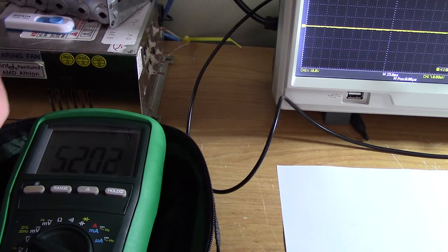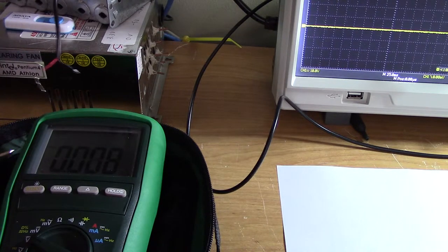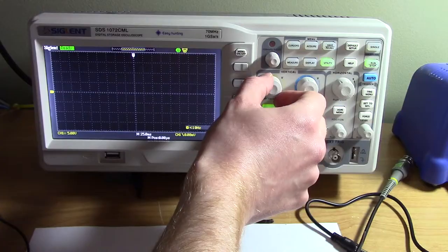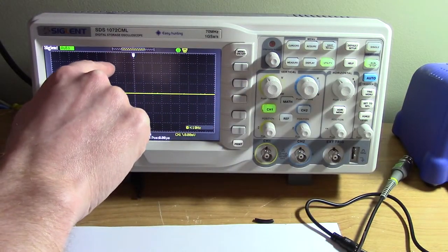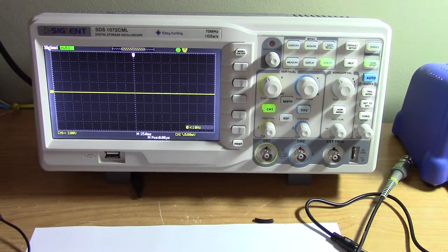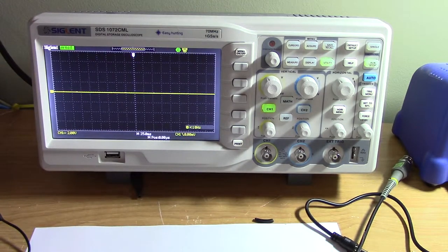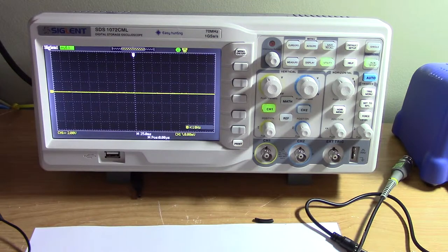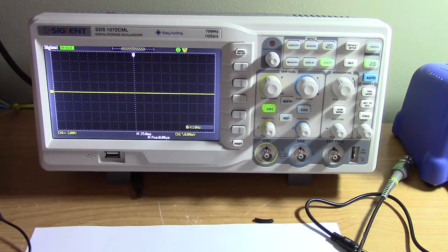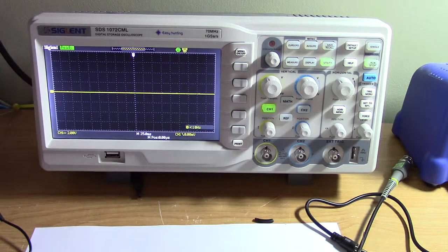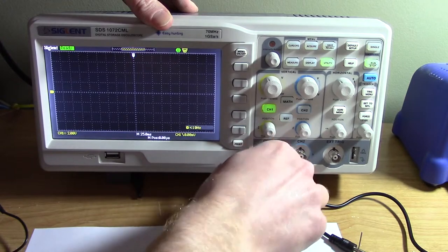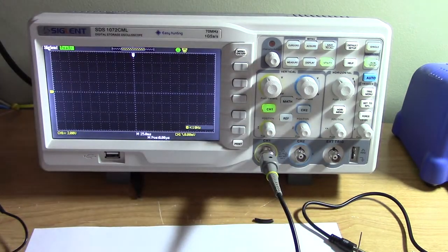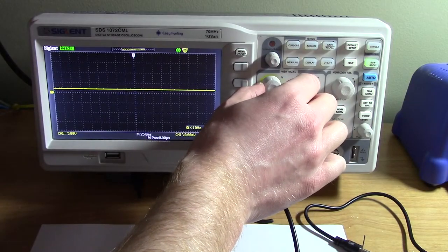Now I'm going to hook up the oscilloscope, two volts per division. I should expect the line to be around here. Let's turn it on and see what happens. That's not looking good, why am I not getting a reading? Oh I forgot to plug in the probe.